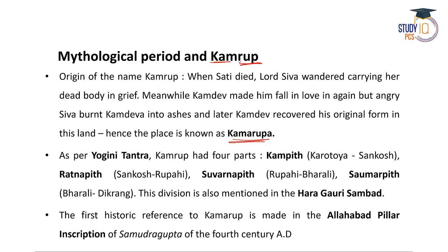As per the Yogini Tantra, Kamrup had four divisions. The westernmost part was Kampith, extending from the Karatoya River to the Khanku River. Then comes Ratnapith. Then Swarnapith, extending from the Rupahi River to the Boroli River in present-day Sonitpur district. Finally, the easternmost part is Homar Pith, extending from the Boroli River up to the Dikrong River in present-day Lakhimpur district.